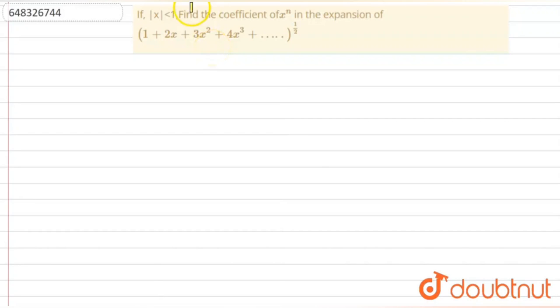We are going to solve this given question. Here, given that |x| < 1, then find the coefficient of x^n in the expansion. So we have to find the coefficient of x^n in this expansion, given that...